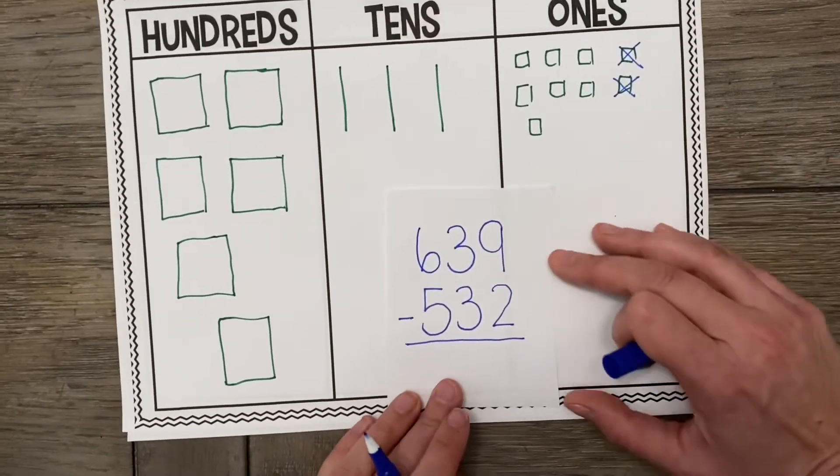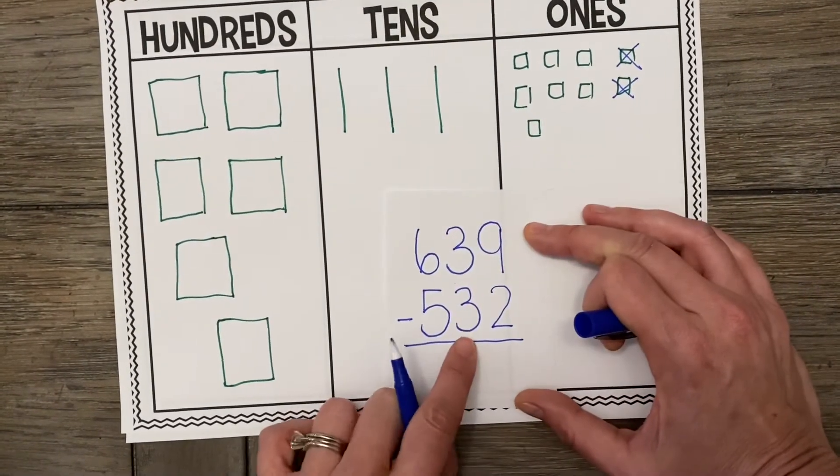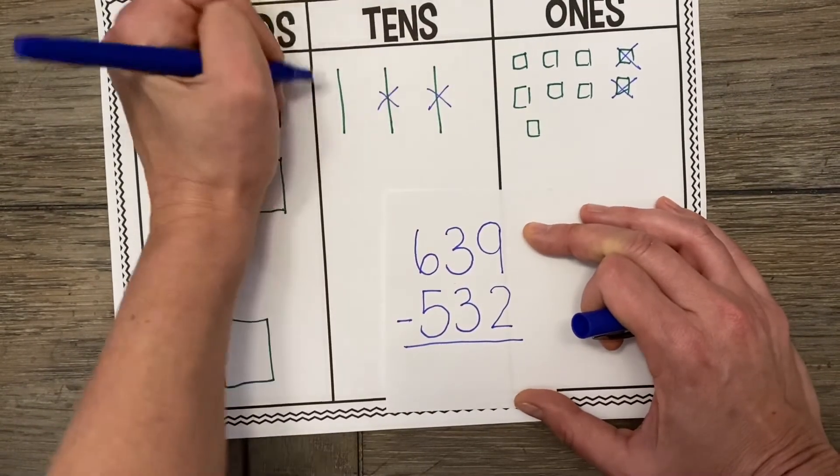How many 10s are we taking away? That's right. We're taking away 3. Oh, they're all going away on that one.